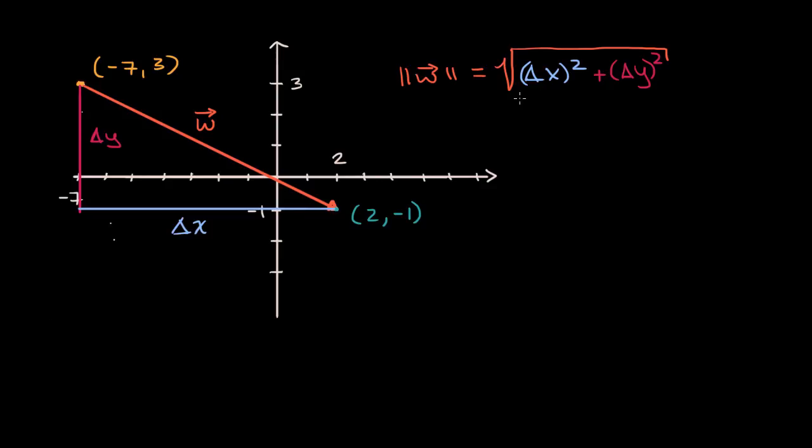And so what will this be? Well, what is our change in x? Our change in x, you could view it as your x final minus x initial. So this would be two minus negative seven, which is equal to positive nine. And so this would be nine squared.